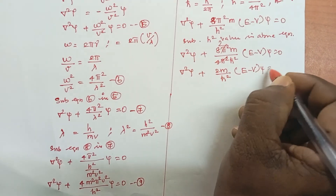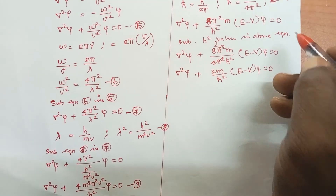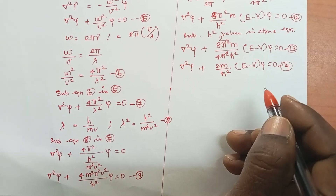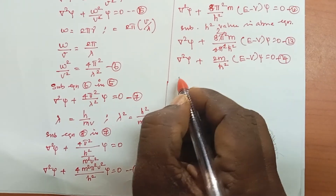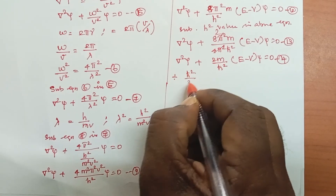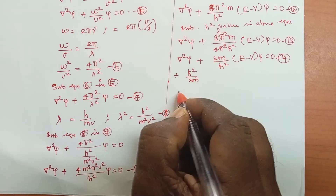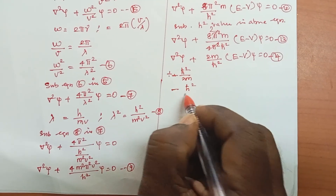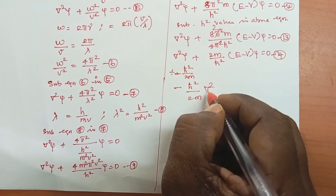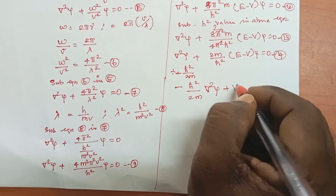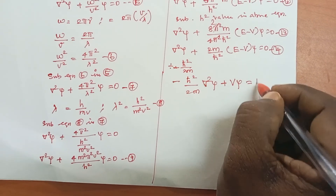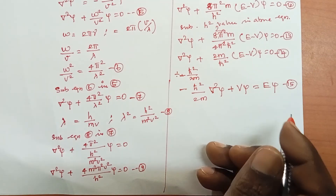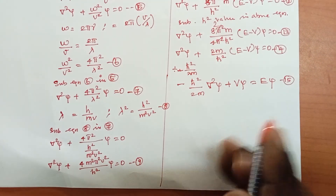This is equation number 15. This is the Schrödinger time independent wave equation: −(ℏ²/2m)∇²ψ + Vψ = Eψ.